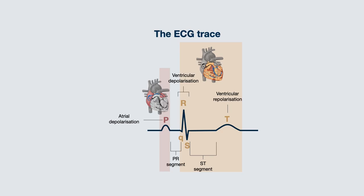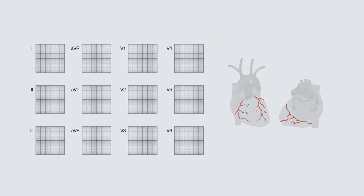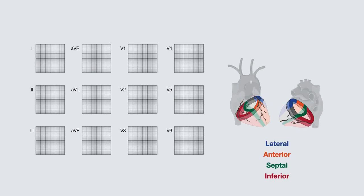We look at the PR segment to determine how the electrical activity moves between the atria and ventricles. We can also pinpoint the location of these changes based on whether there is vascular territory involvement, which requires a full 12-lead ECG. This concept of cardiac walls, vascular territories, and contiguous leads is not covered here, but is covered separately.